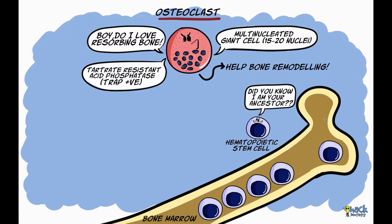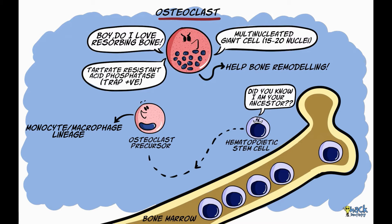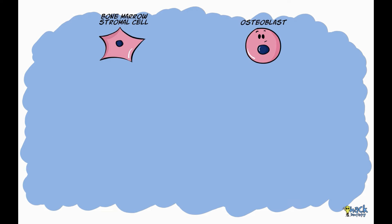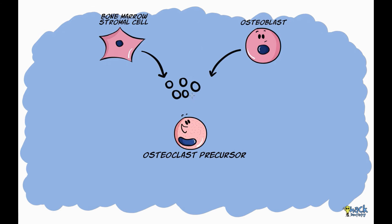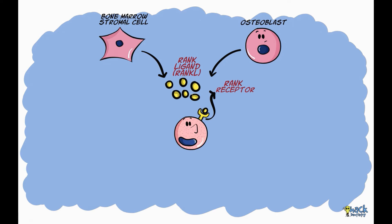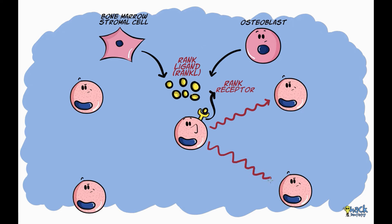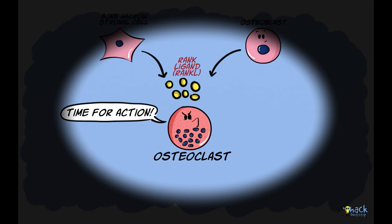Osteoclasts are hematopoietic in origin and are derived from the monocyte macrophage lineage of cells. Bone marrow stromal cells and osteoblasts are responsible for secreting a RANK ligand which combines with a RANK receptor on the osteoclast precursor. This induces a signaling cascade leading it to fuse with other precursor cells to form an osteoclast.